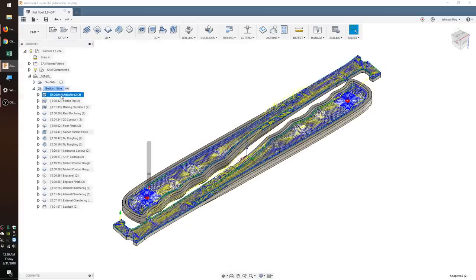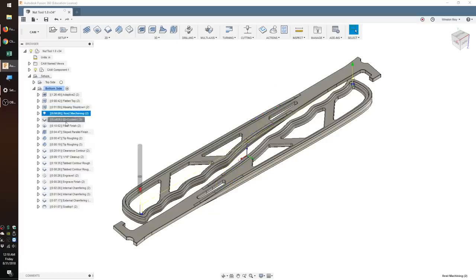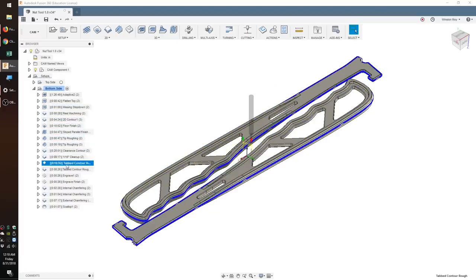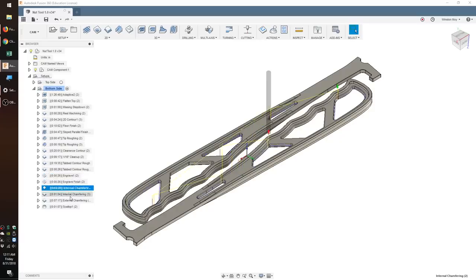On the flip side, I would adaptive clear as much as possible. Then, I would use the one sixteenth inch end mill to complete the cutout of the part. The V-bit would come back to play to engrave my friend's initials and also chamfer the edges. The scallop tool path would finish everything off.